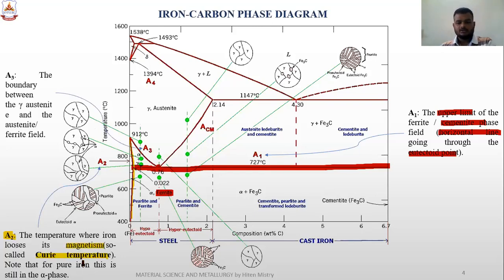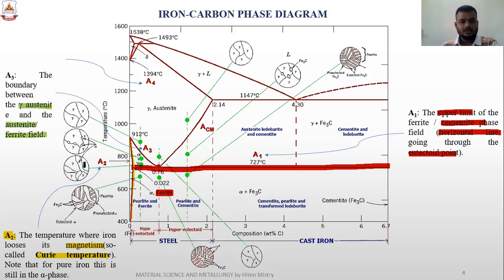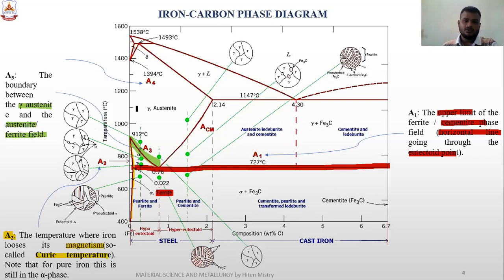Now talking about A3. A3 is the boundary between gamma austenitic structure and the austenite-ferrite field. It shows the boundary between the gamma austenitic structure and the austenitic ferrite field. This is the A3 line which we have seen.